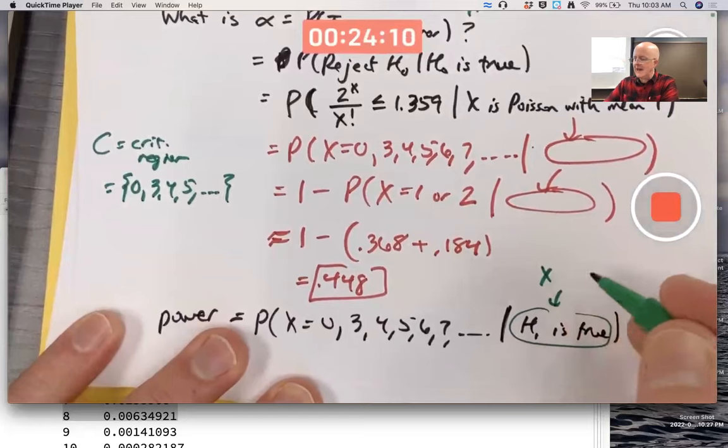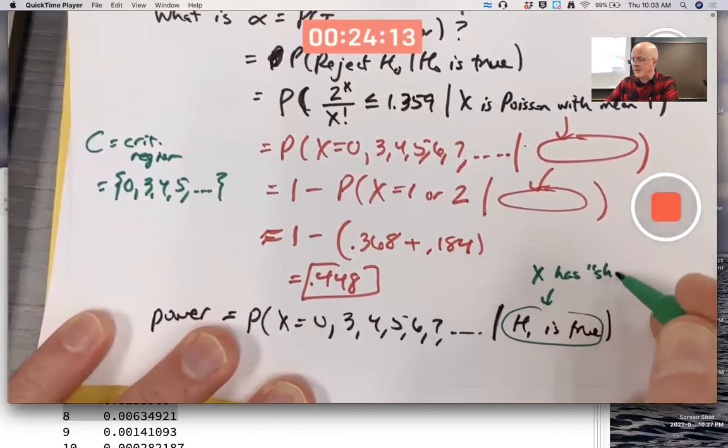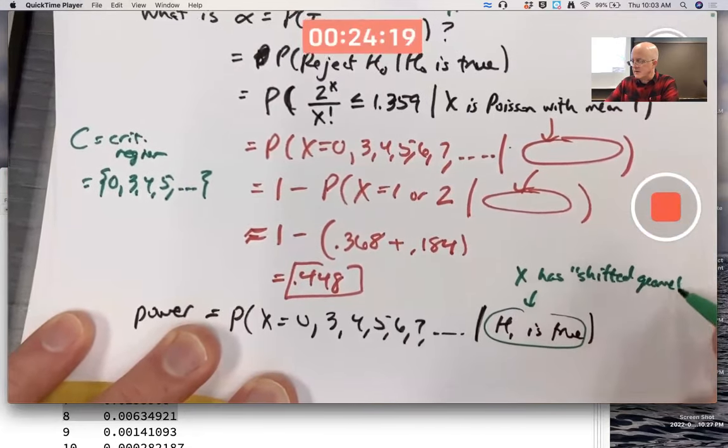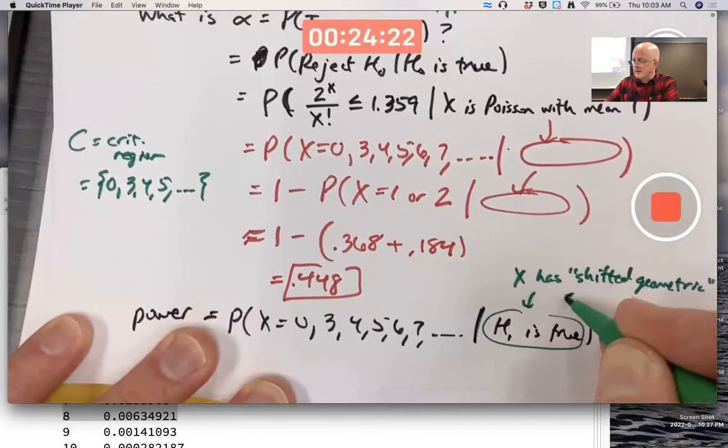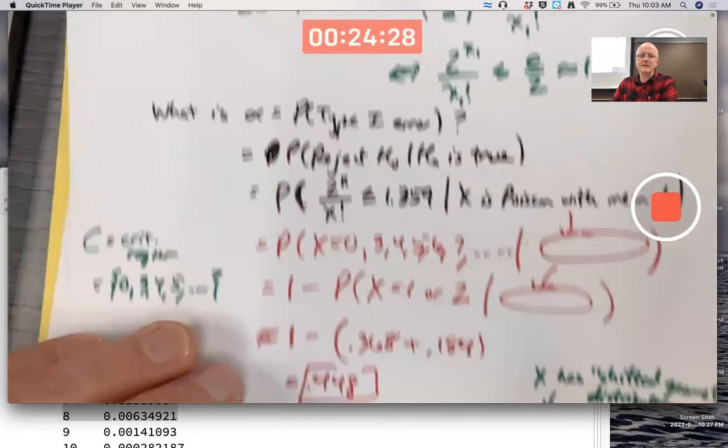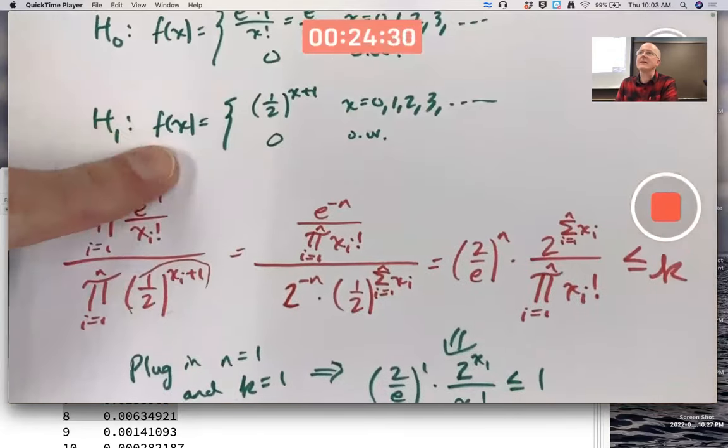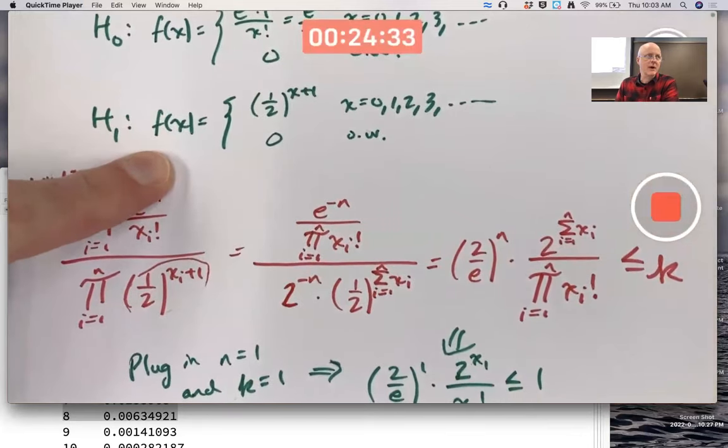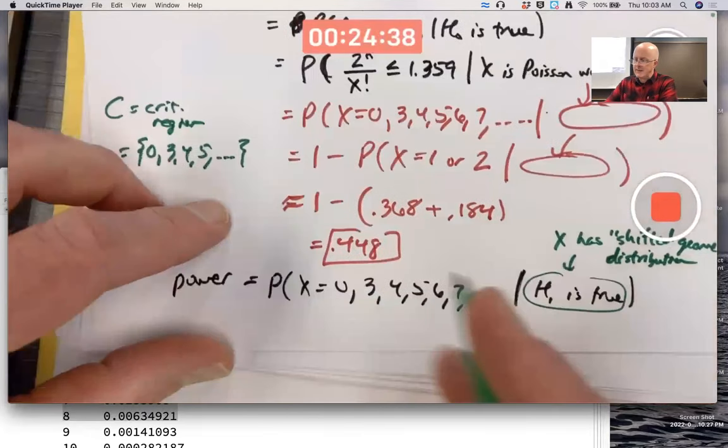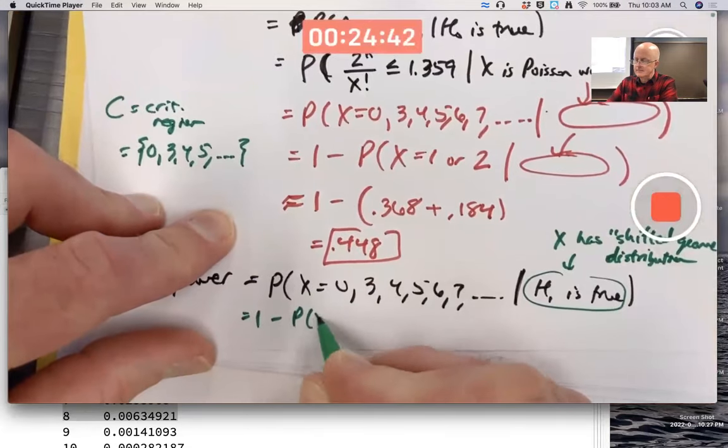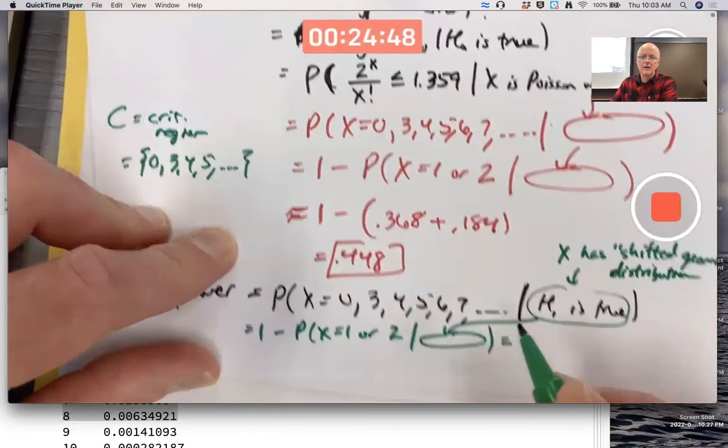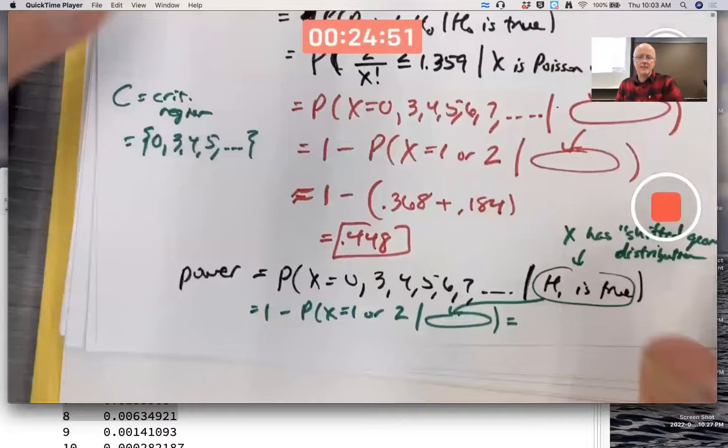H1 is true. Which means X, the random variable has a quote unquote shifted geometric distribution. This is my name, by the way, shifted geometric. I don't know that that's the official name. Its PMF is that thing. So that's the thing we have to use to compute probabilities for the power. And once again, we should use the complement rule.